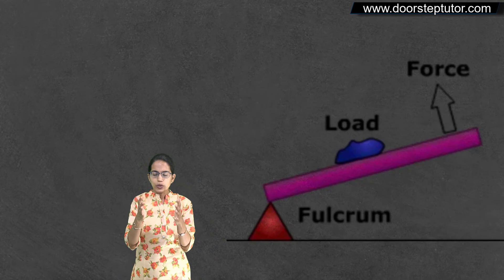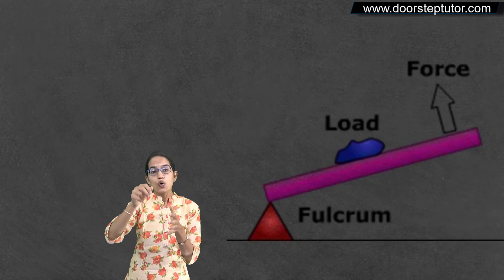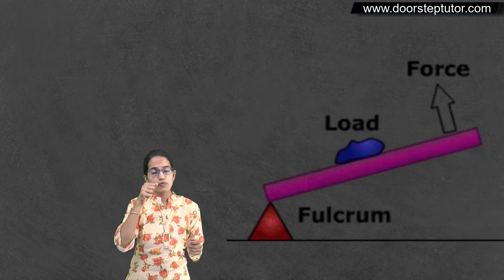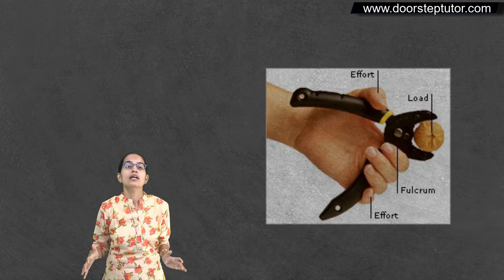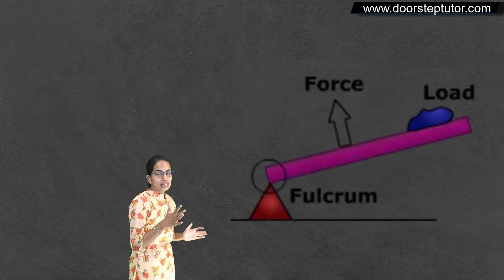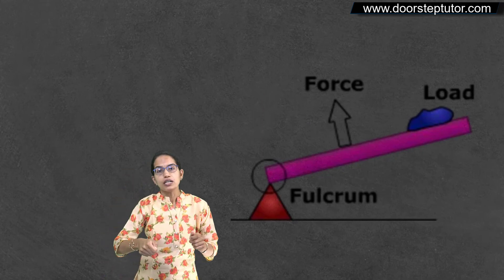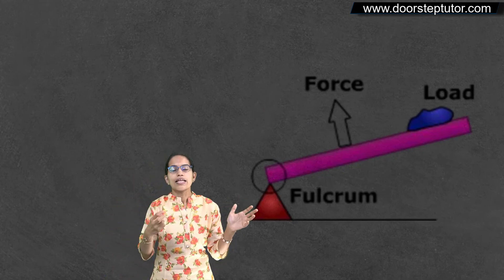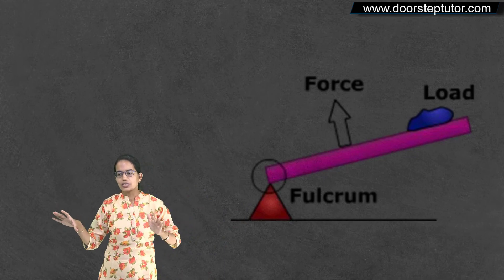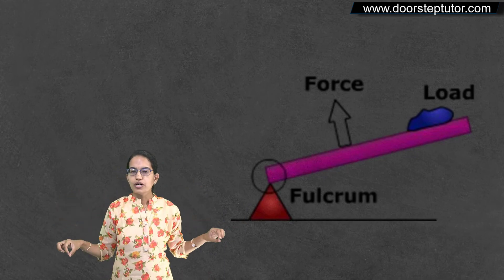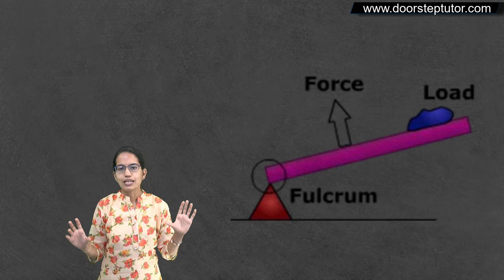Class 2 lever is a case where load is in between. Nutcracker is a perfect example. In the case of class 3 lever, you have effort which is in between. And that is the basic thing that you need to remember. Once you are clear with this concept, the concept of levers become extremely easy.